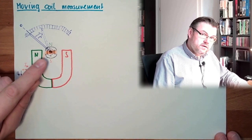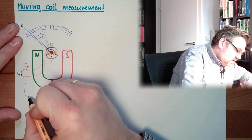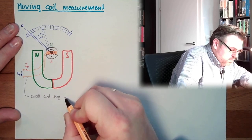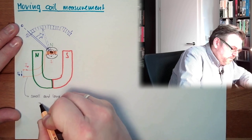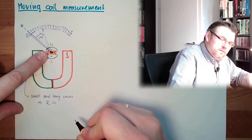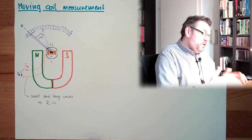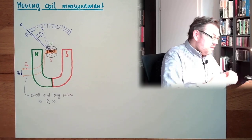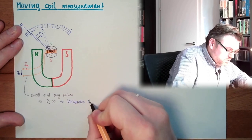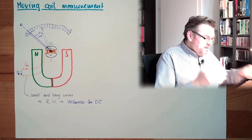Actually, it's measuring current, but because these are really small and tiny wires, small and long wires, the internal resistance of this coil is rather big. At which measurement device do we need a big internal resistance? Well, this is a voltmeter for direct current, DC. This is a voltmeter for DC, nothing else.